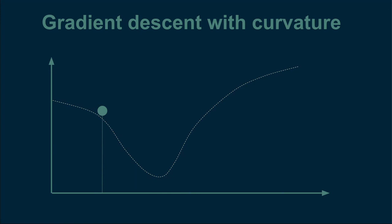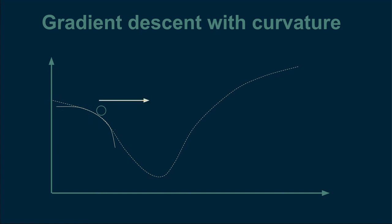Gradient descent is the first-level trick for brewing fewer cups of tea. A more advanced method uses curvature: make your original cup plus one a bit warmer and one a bit cooler to see how the curve goes. If it's steep and getting steeper, take a giant step. If the curvature is bottoming out, take a smaller step. This helps reach the minimum in fewer steps as long as your curve is relatively well-behaved.